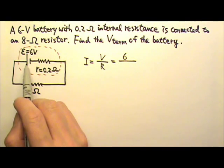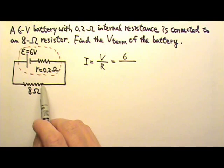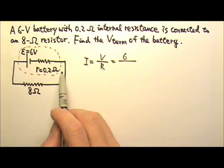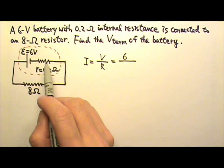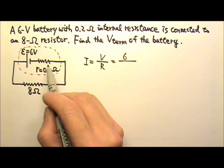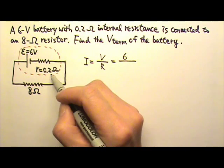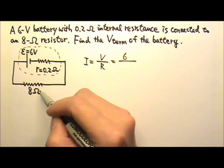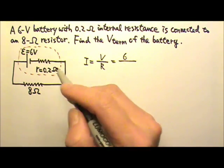Also, whatever current that goes through this resistor, the current has to continue to flow to this resistor. So they get the same current. They are in series. That means the equivalent resistance in the circuit is R1 plus R2, 8 plus 0.2.